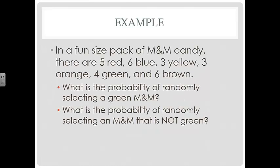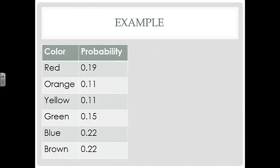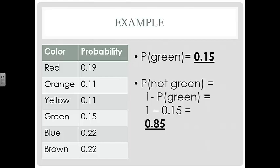Another example: in a fun-sized pack of M&M candy, there are 5 red, 6 blue, 3 yellow, 3 orange, 4 green, and 6 brown. What is the probability of randomly selecting a green M&M, and what is the probability of selecting one that is not green? This is the same data from section 5.1, and it forms a valid probability model since all probabilities sum to 1 and each is between 0 and 1. The probability of selecting a green M&M is 0.15. For not green: 1 minus 0.15 equals 0.85. You could also add up all the other probabilities to get the same answer — either method works.